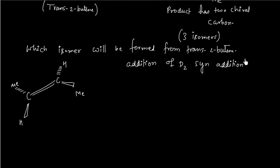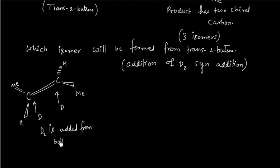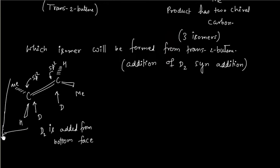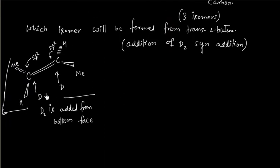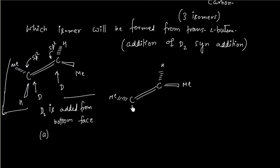So we have two possibilities. One is: both deuteriums are added from the bottom face. This molecule is planar because it is sp2-hybridized on both carbons. So this molecule is planar in nature. One can attack from either the top face or the bottom face. This is bottom-face attack — let us call this Possibility A.